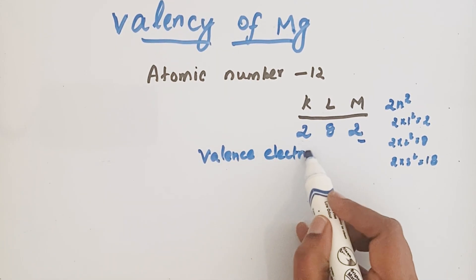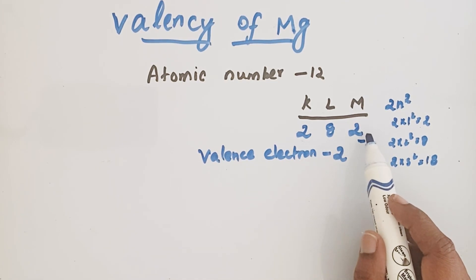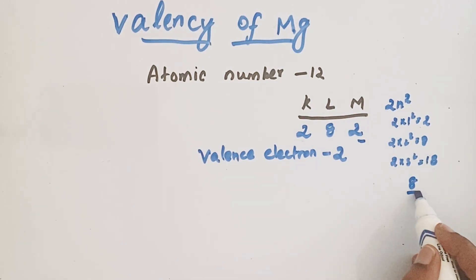So from that we can find the valency. Atoms of an element try to get octet configuration in the outer shell. Octet means 8 electrons. These 8 electrons give them stability.